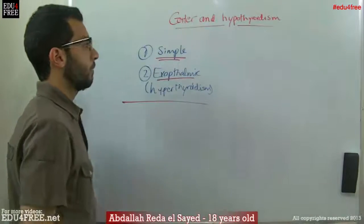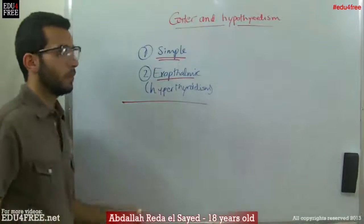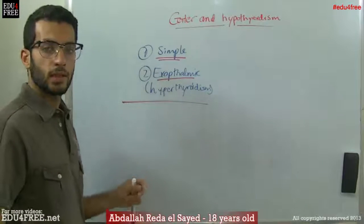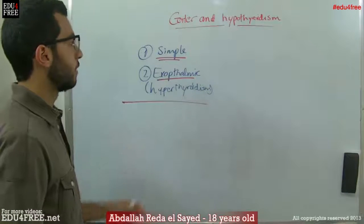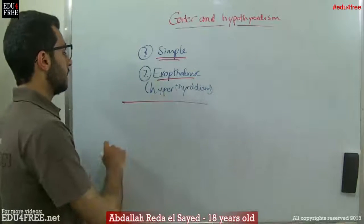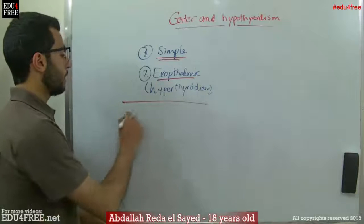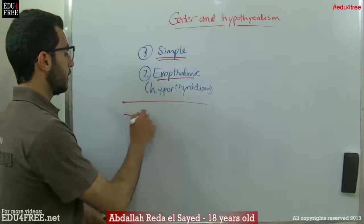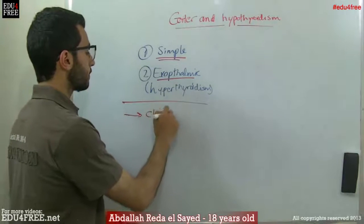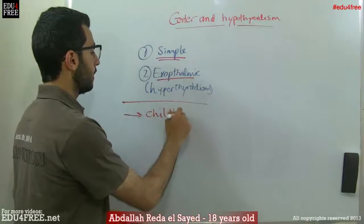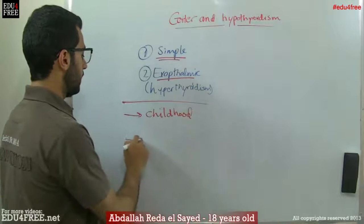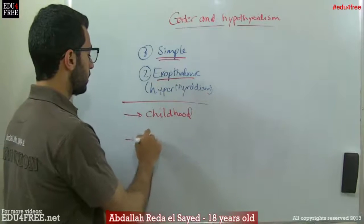Now, Hypothyroidism, as we said, is the decrease in the volume of the thyroid gland. This occurs both in childhood and in adulthood.